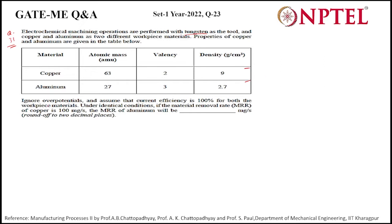We have to ignore the overpotential and assume the current efficiency is 100% for both workpiece materials. The identical conditions mean we are providing the same current to both workpieces — this is the main point here.